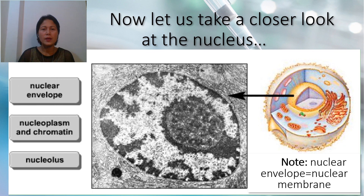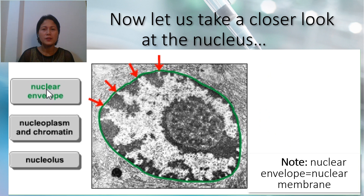This is a micrograph of the nucleus. Let's see the nuclear membrane first. The nuclear membrane is a double-layered structure that encloses the contents of the nucleus. The outer layer of the membrane is connected to the endoplasmic reticulum. The envelope helps to maintain the shape of the nucleus and assists in regulating the flow of molecules into and out of the nucleus through nuclear pores.